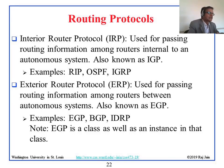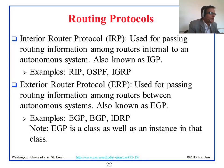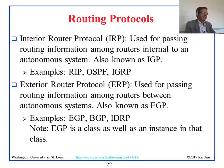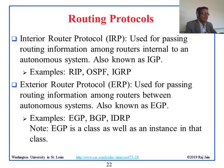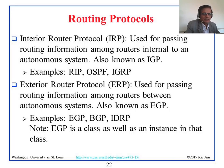Interior protocols include RIP, OSPF, and IGRP. Exterior protocols include EGP, BGP, and IDRP. Note that EGP is both a class name and a specific protocol, which can be confusing. We will only talk about OSPF for interior and BGP for exterior — one representative from each class.